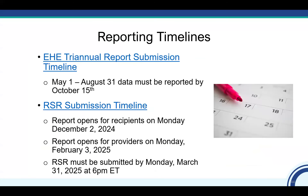I also want to be sure that the reporting due dates are on your radar. The EHE triannual provider report is due three times a year. The system is actually open now for the period of May 1st through August 31st — the report is due October 15th. Your recipient may set an earlier deadline. The RSR is submitted once a year — the report opens on the first Monday in December for recipients, the first Monday in February for providers, and it's always due the last Monday in March at 6 o'clock Eastern.